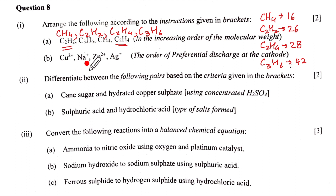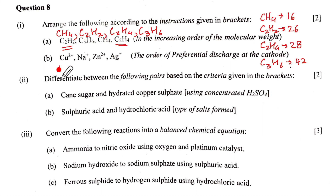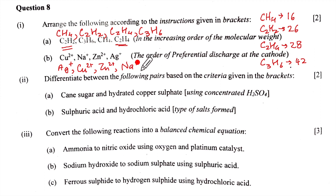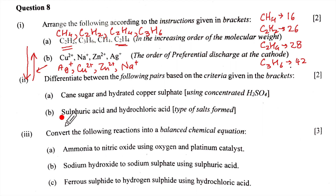Part B: arrange Cu²⁺, Na⁺, Zn²⁺, Ag⁺ in order of preferential discharge at cathode. The lower the ion in the electrochemical series, the more readily it is discharged. Ag⁺ is lowest, then Cu²⁺, then Zn²⁺, then Na⁺. The preferential discharge order is therefore: Ag⁺, Cu²⁺, Zn²⁺, Na⁺.